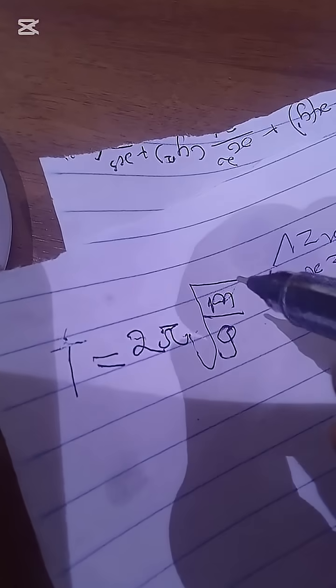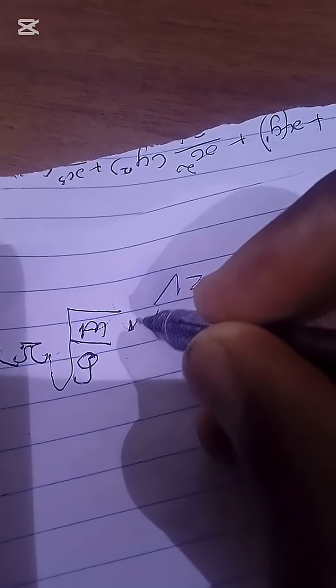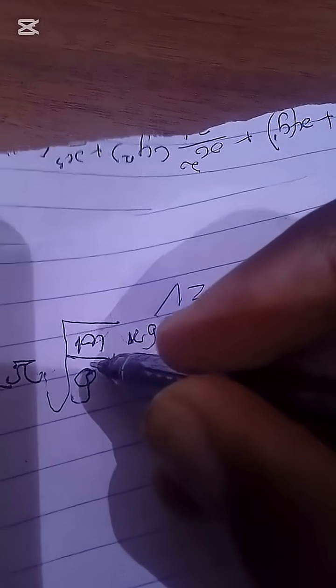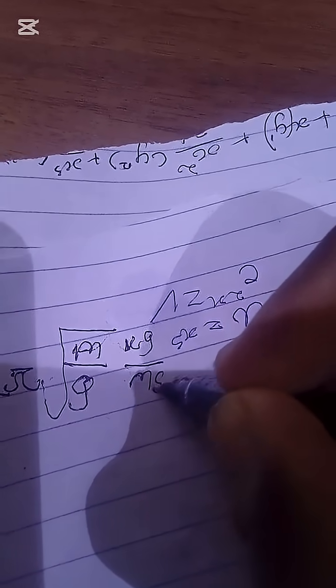This equation is incorrect. Why? Because mass is measured in kilograms. Acceleration is measured in meters per second squared. And this flipping one is measured in seconds.